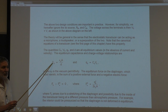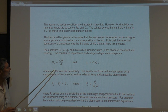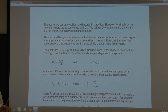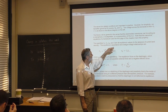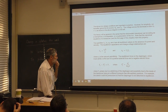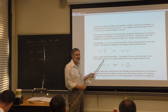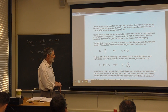For a parallel plate capacitor, C = ε₀A/D. We call x the displacement of the movable plate, D is the equilibrium separation, and ε₀ is the fundamental constant in electromagnetism — the permittivity of vacuum.